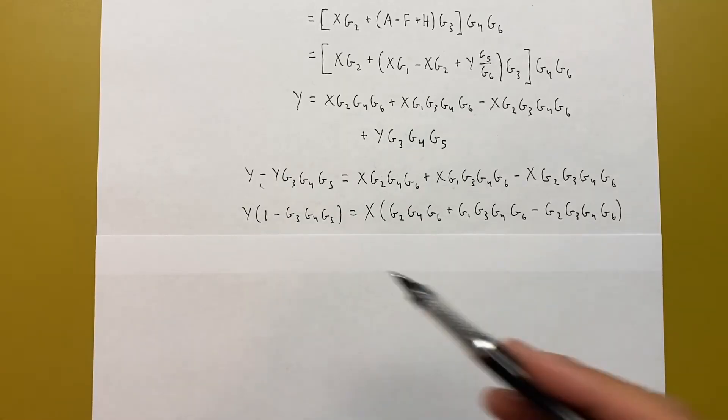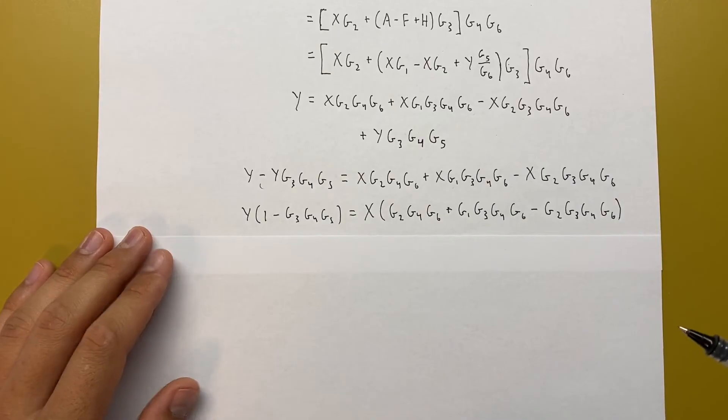So Y times 1 minus G3 G4 G5 is equal to X times all of these G's. And then the last step from here, now that we've got X and Y factored out, it's just to write the transfer function.